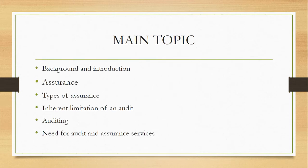We differentiated clearly the levels of assurance engagement, where we saw we have three levels: the first one is reasonable assurance, the second one is limited assurance, and the third one is absolute assurance. Today's session we are going to talk about the inherent limitations of an audit.